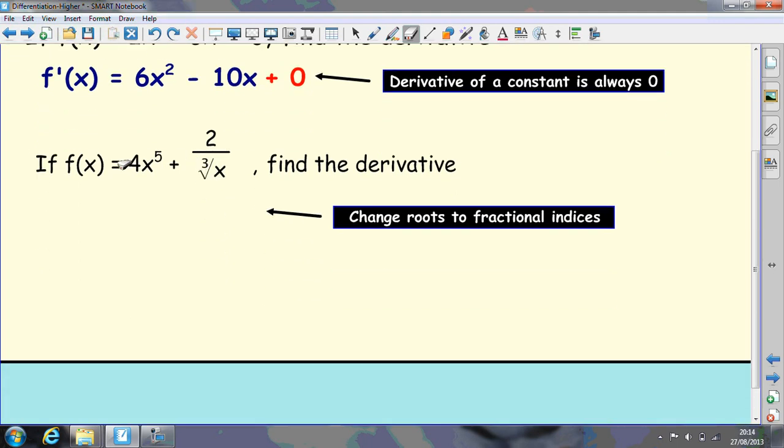Okay, example here. f of x equals 4x to the power of 5 plus 2 over the cube root of x. We have to remember that the cube root of x can be rewritten as x to the power of a third, and as before take it up the top, so x to the negative of a third.